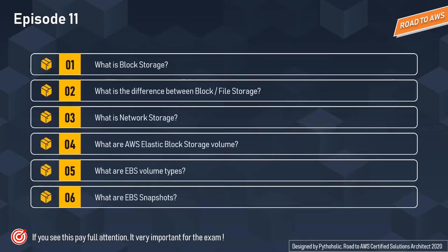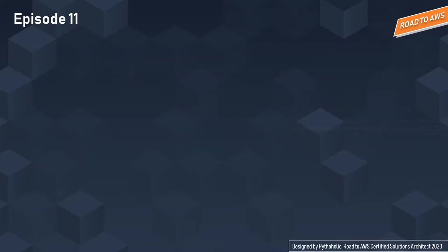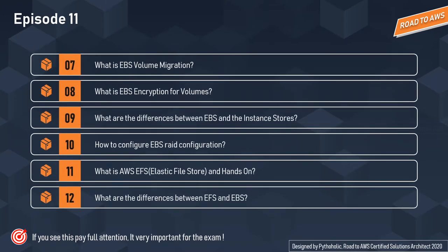In today's episode of Roto AWS we will be discussing: what is block storage, what is the difference between block and file storage, what is network storage, what are the AWS Elastic Block Storage volume types, what are EBS snapshots, EBS volume migration, EBS encryption, differences between EBS and instance stores, EBS RAID configurations, AWS EFS (Elastic File Store) and its hands-on, and the differences between EFS and EBS.